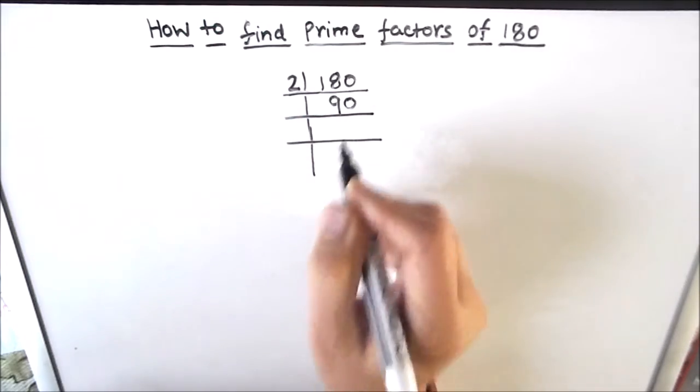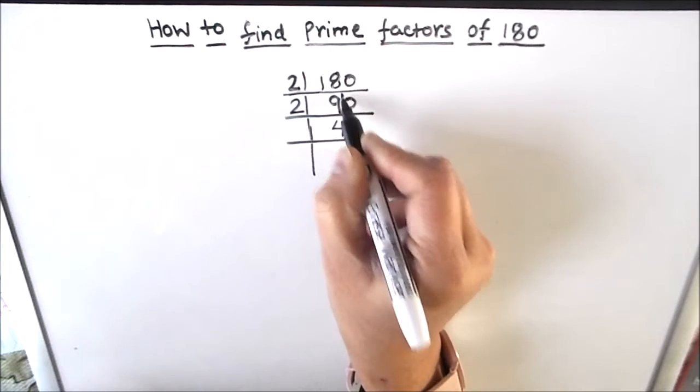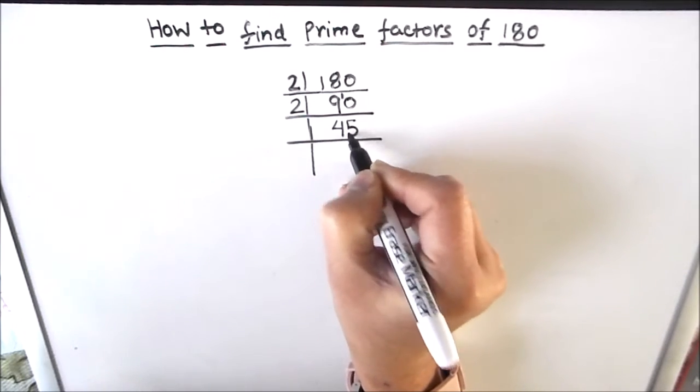Again, 90 is an even number, it is divisible by 2. 2 times 4 is 8, 1 is remainder, this becomes 10. 2 times 5 is 10.